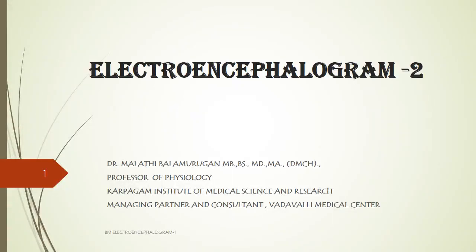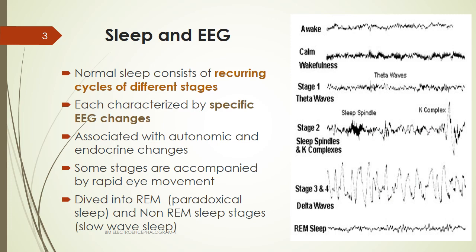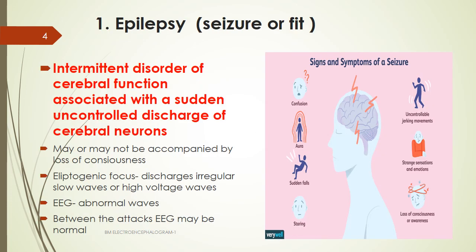We will go into the electrocardiogram part 2, where we will focus much on the applied aspects of the use of the electrocardiogram. The objectives of this class will be to know the relationship between sleep and EEG, and also the diseases and abnormal EEG waveforms. Sleep constitutes many stages, and when we record the EEG during sleep, we have different waveforms in different stages.